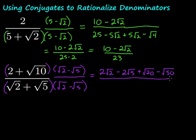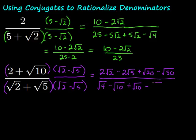We'll simplify the top in a bit. On the bottom: square root of 2 times square root of 2 is square root of 4. Then square root of 2 times negative square root of 5 is minus square root of 10. Then square root of 5 times square root of 2 is plus square root of 10. And finally, square root of 5 times negative square root of 5 is minus square root of 25, which we know is going to be a nice number.